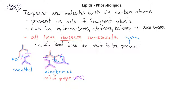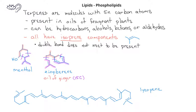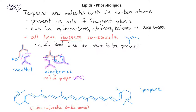Terpenes can also be much larger compounds. Lycopene, the compound responsible for the red coloring of tomatoes and watermelon, has multiple terpene units, as indicated here.